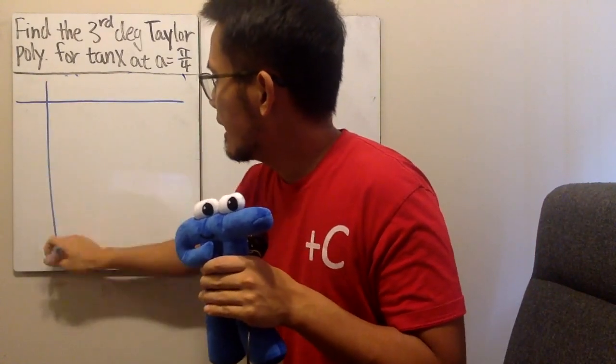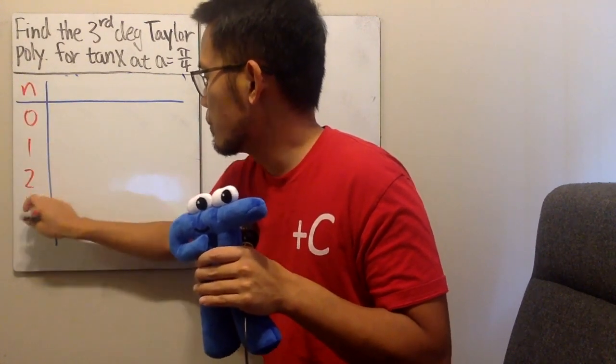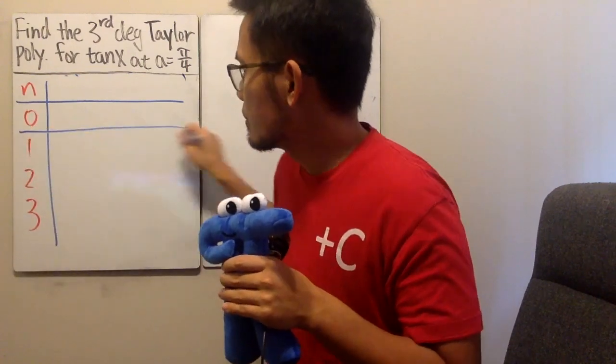Of course, we use the Taylor formula, and the good thing is we just have to get a few of them. n is equal to 0, 1, 2, 3, and that is actually enough.